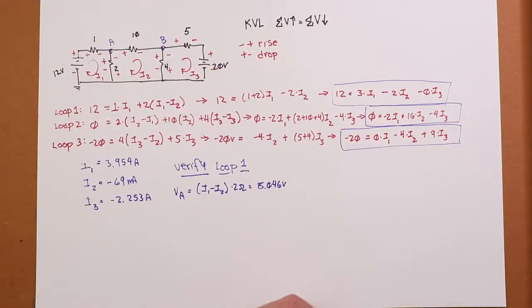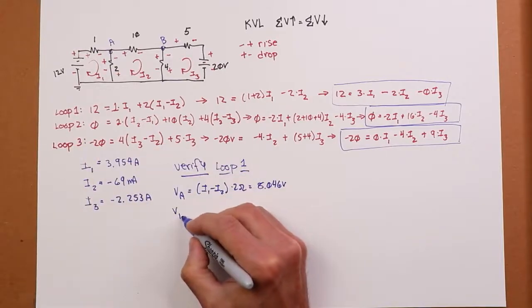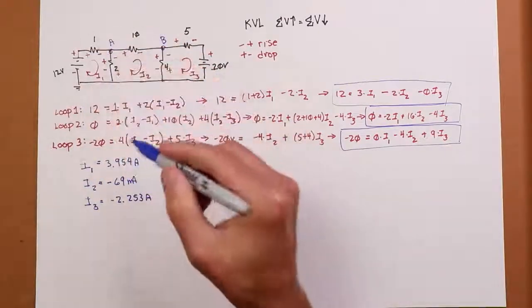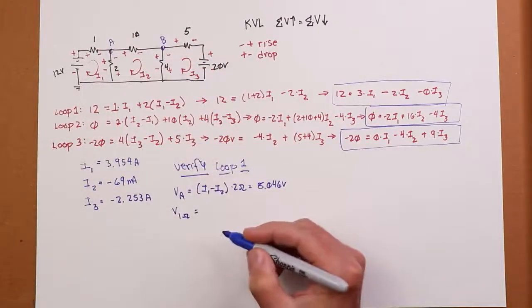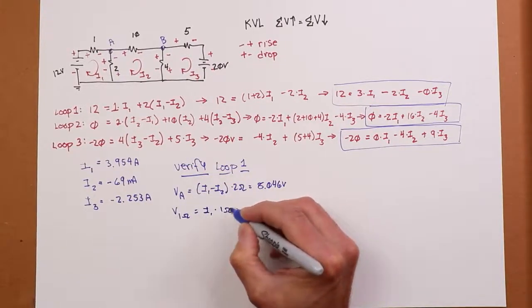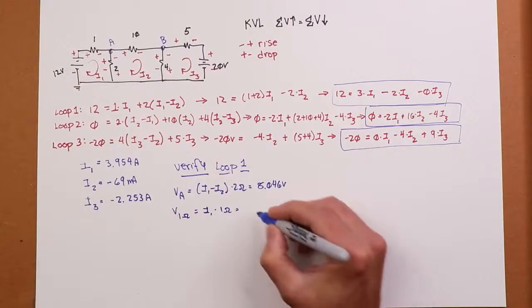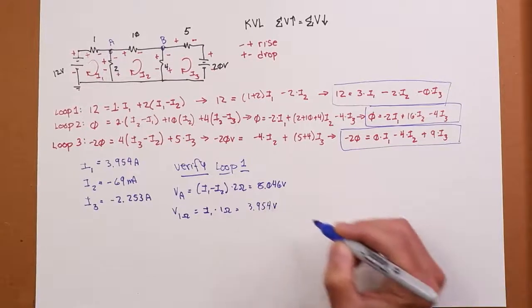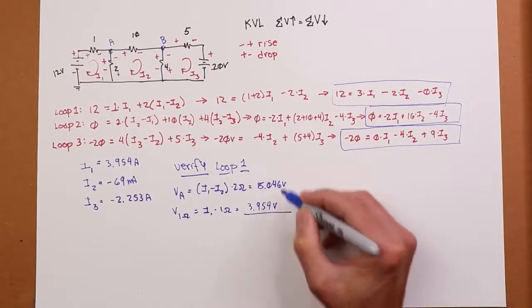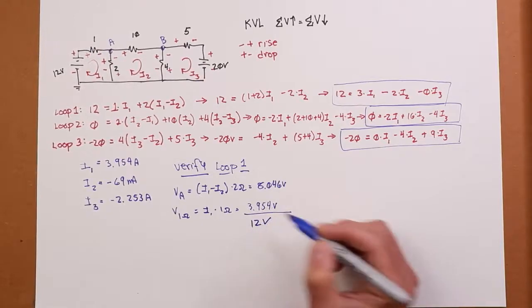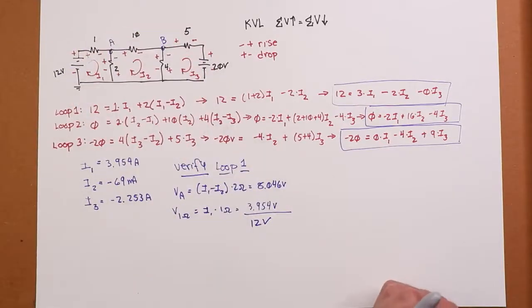And then, when we look at the 1 ohm, that just happens to be the mesh current flowing through the 1 ohm. So, that's just I1 times 1 ohm, which will work out to 3.954 volts. Nothing like multiplying by 1. And if you add these two things together, you wind up with 12 volts, which is the rise that you had. So, that works great.